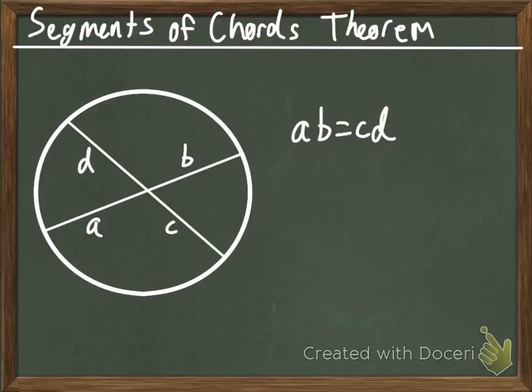So, this is the segments of Chords Theorem. We have two chords and they're broken up into two segments each. We have this first chord, which is broken up into segments A and B.